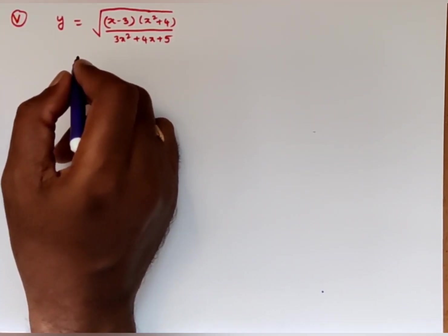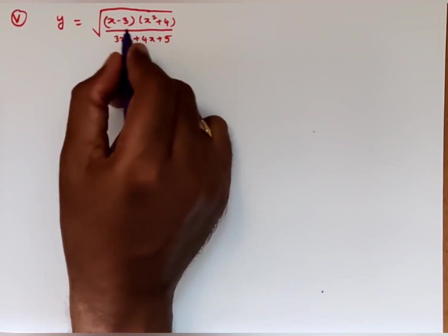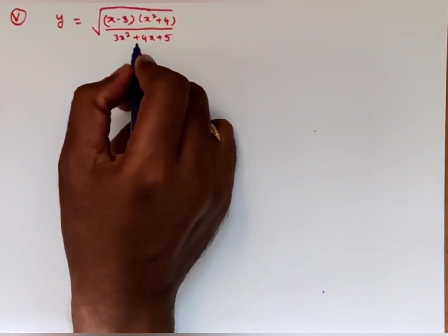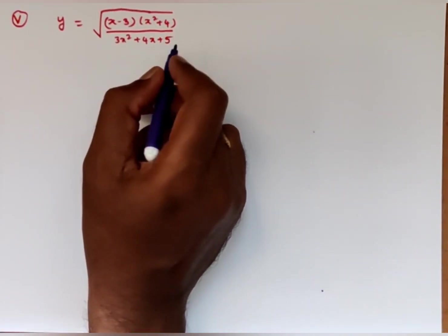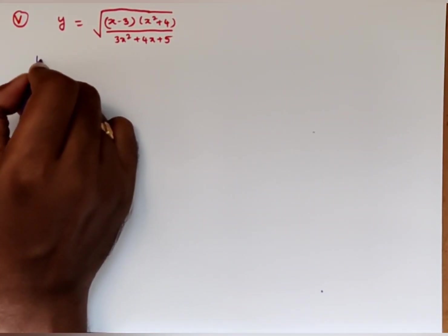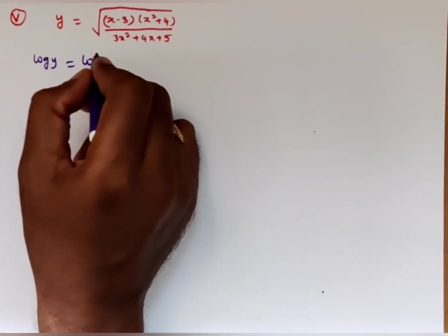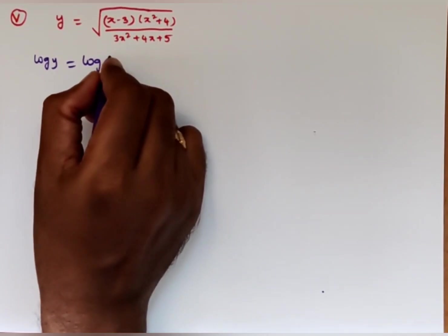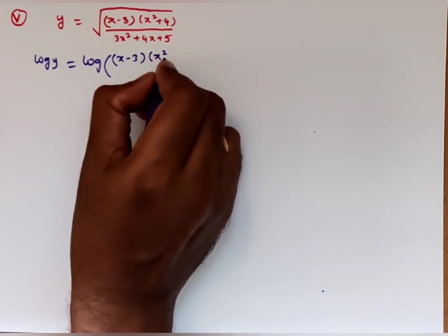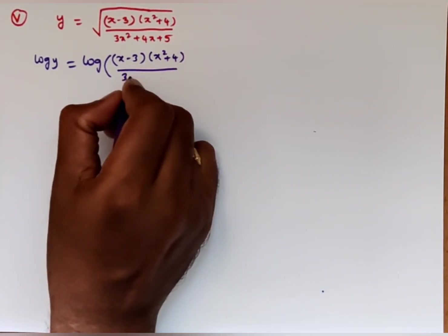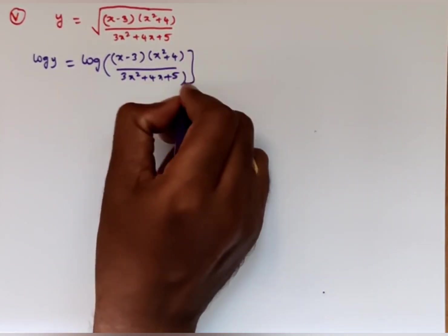Now one more problem from the same bit. y equals square root of [(x minus 3)(x² plus 4)] divided by (3x² plus 4x plus 5). Again, better apply the logarithm. Taking logarithm on both sides: log y equals log of [(x minus 3)(x² plus 4) / (3x² plus 4x plus 5)]^(1/2). The square root is written as power 1/2.